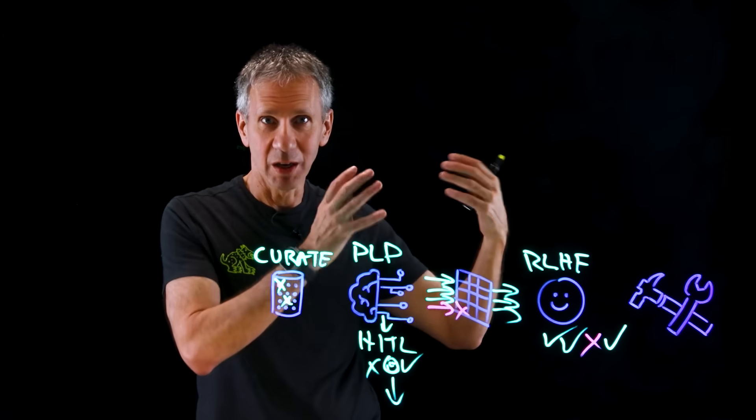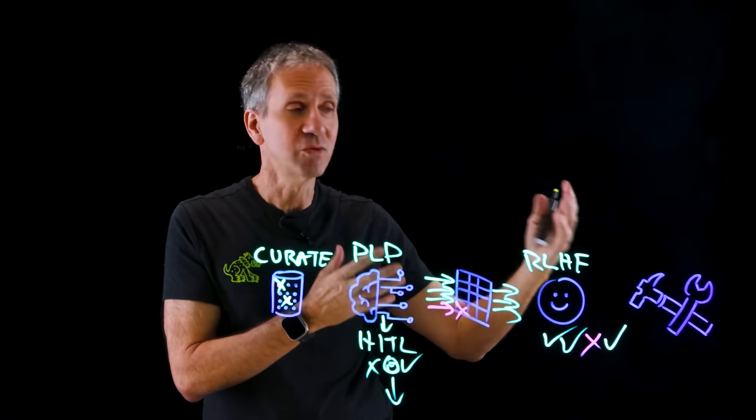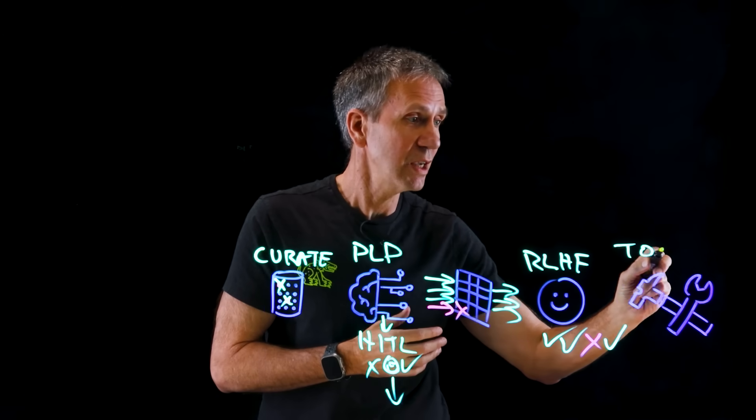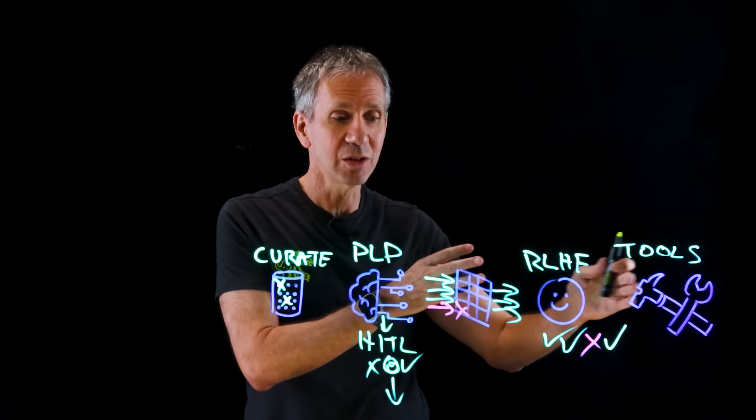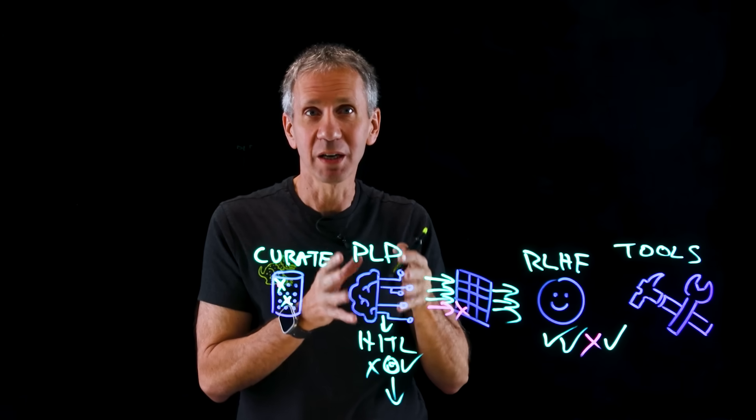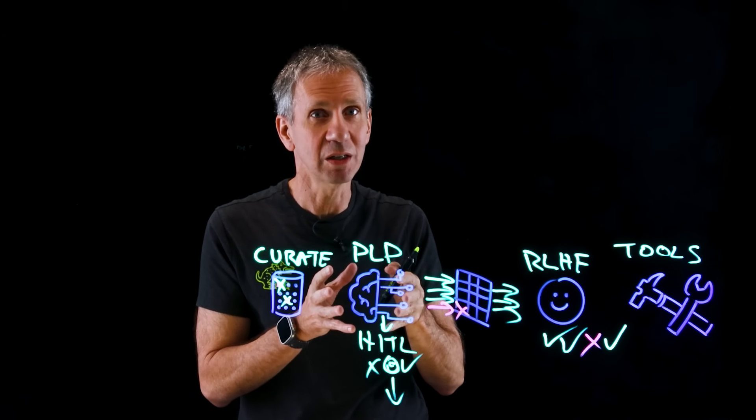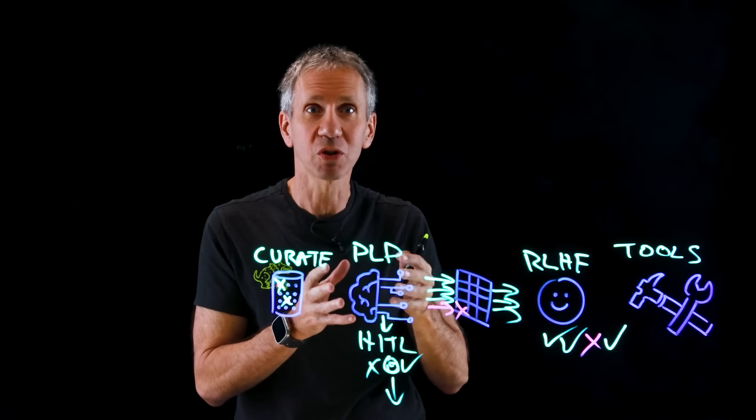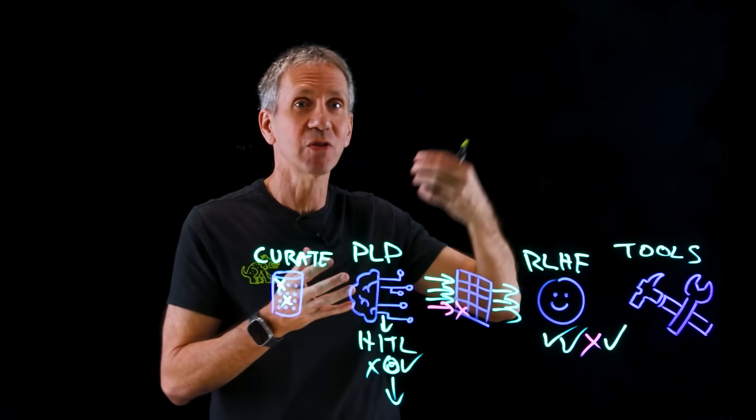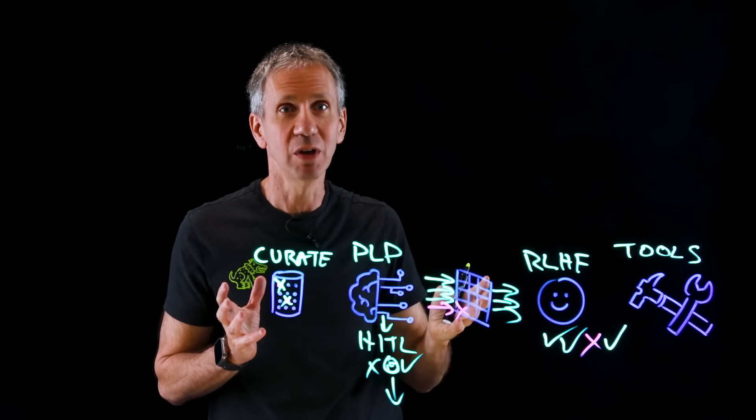And then finally, an area that's emerging is a new class of tools. So we're going to see, in fact, we already have seen tools that are designed to look for malware in a model. Yes, models can contain malware. They can have backdoors and trojans, things like that, that exfiltrate your data or do other things you didn't intend it to do.